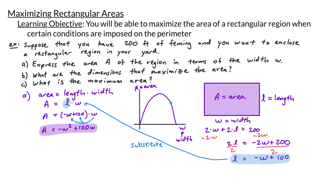For any point on this graph, the first coordinate tells me about the width and the second coordinate tells me about the corresponding area. For parts B and C of this problem, we're asking what dimensions maximize the area and what is the maximum area. Since the vertical axis tells us about the area, we want to find the highest point on the graph — that point is the vertex of our parabola.